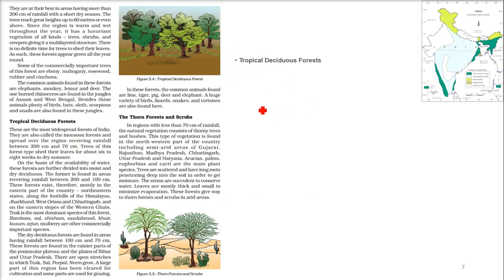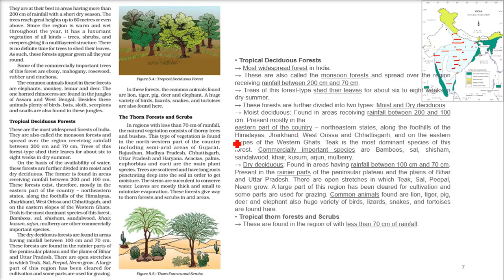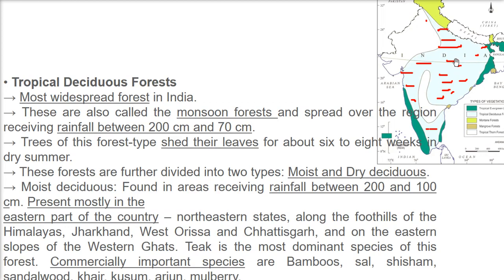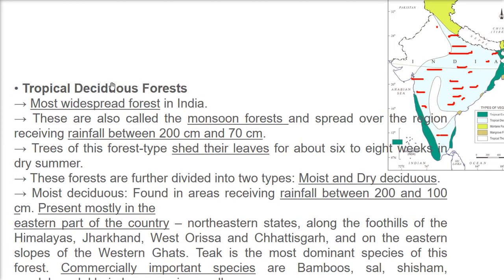Tropical deciduous forests are also known as monsoon forests and are spread over a large region of India. They get around 200 to 70 centimeters of rainfall annually. The key feature of deciduous — meaning shedding the leaf — is that trees shed their leaves for about six to eight weeks during high dry summer.